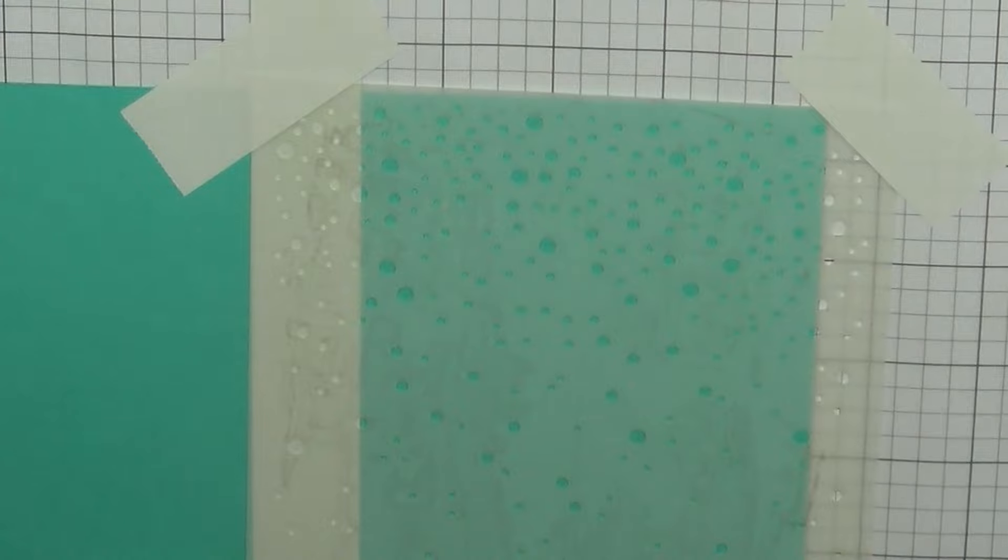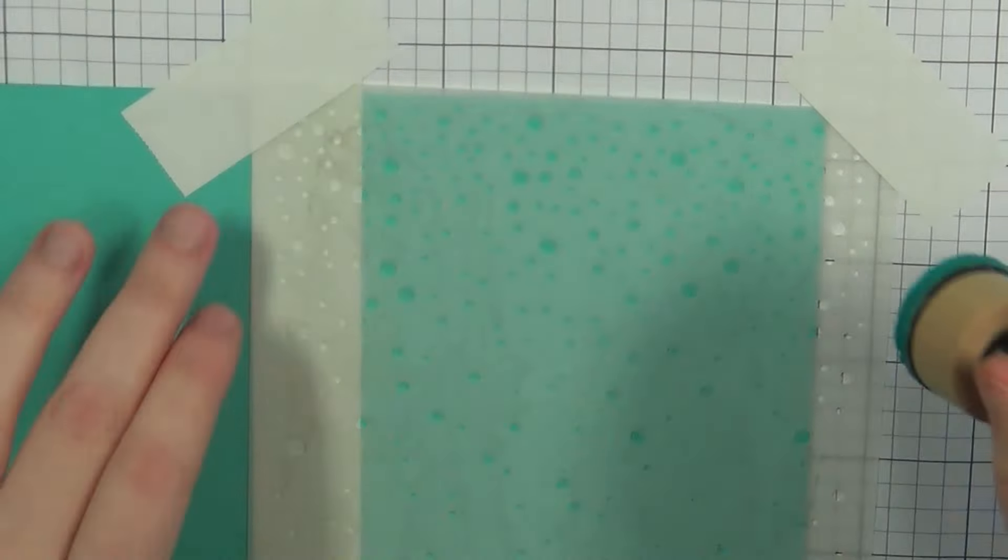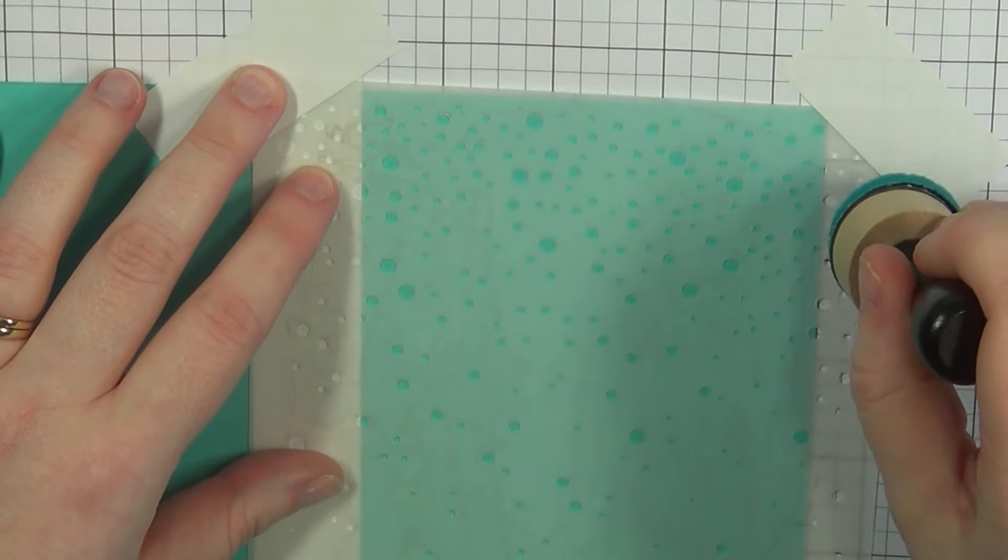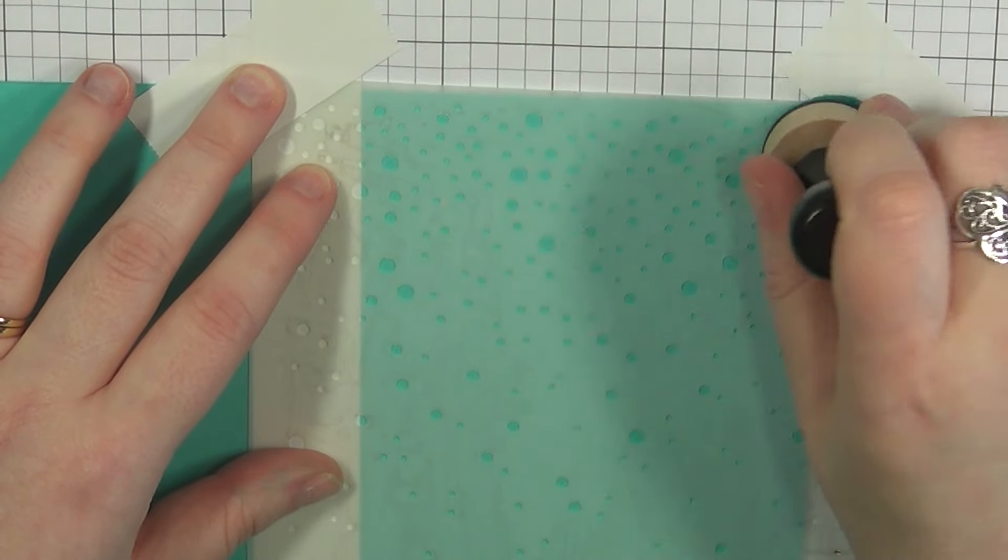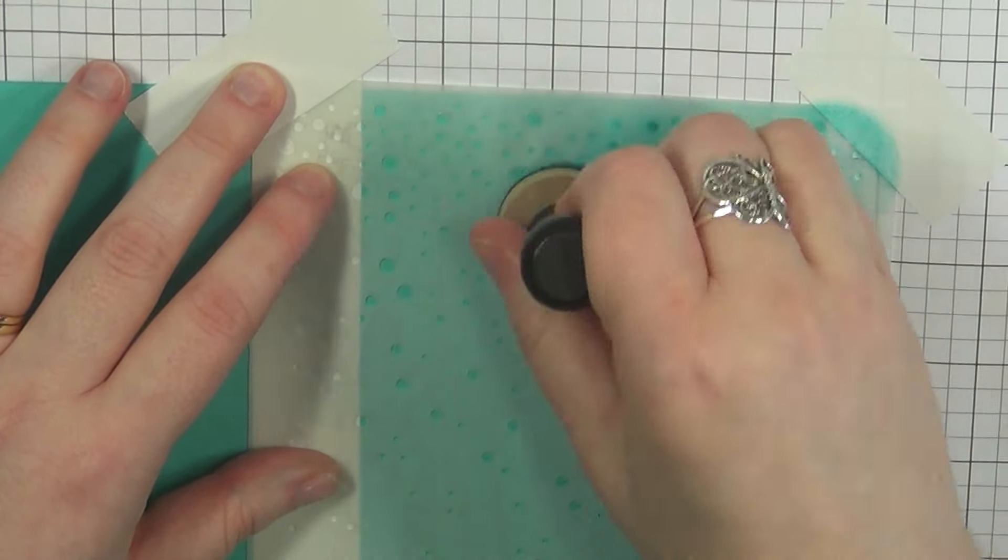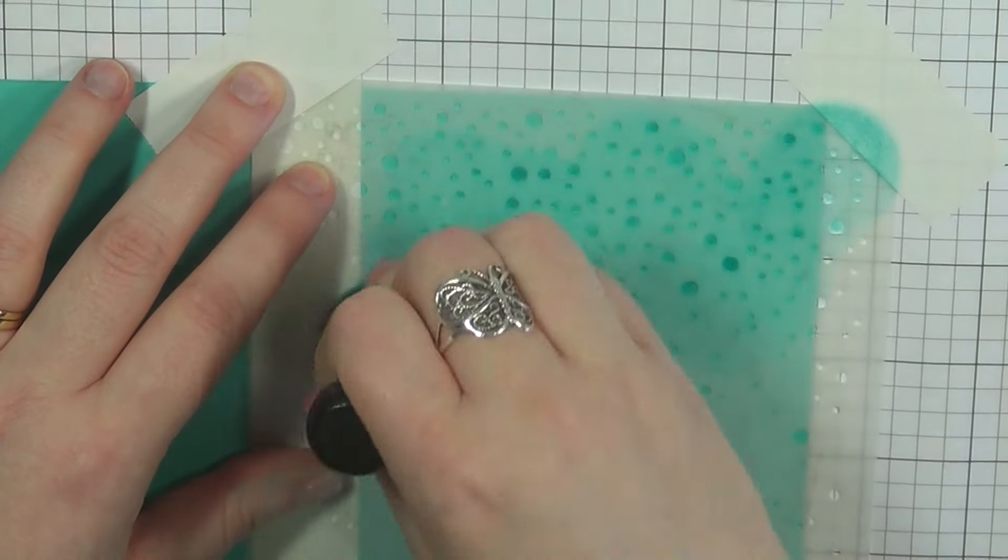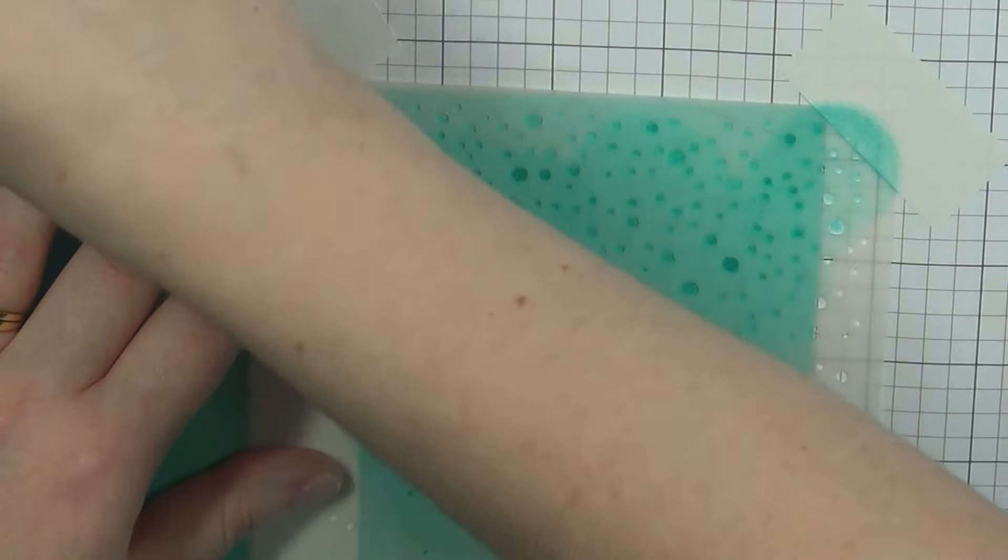I'm going to take my ink blending tool and just kind of go around and take that ink and press that into the stencil and just kind of turning it as you can see there. I'm just kind of turning it as I go around all the stencil.